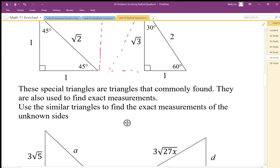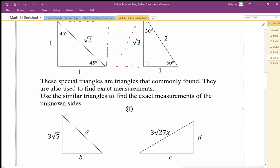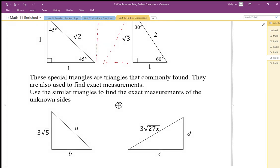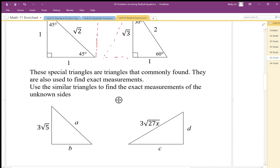We can use these proportions to find exact measurements of these unknown sides. If I want to find out the length of A, B, C, and D, I can use the ratios here. There's a few different ways I can do it. I can use this as similar triangles.